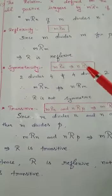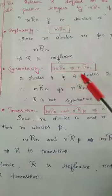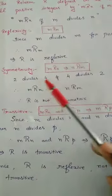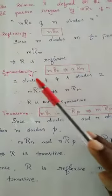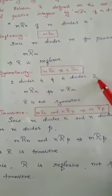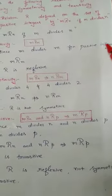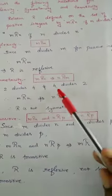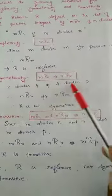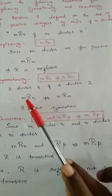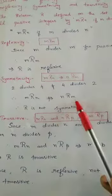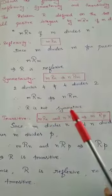Next is symmetricity. The definition is: M is related to N implies N is related to M. For example, considering 2 and 4 — here 2 divides 4, but 4 does not divide 2. We are talking about only positive integers, so 4 divided by 2 gives a fraction. Their results are not equal, so M related to N does not imply N related to M. Therefore R is not symmetric.